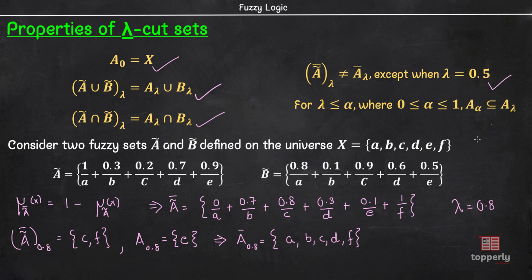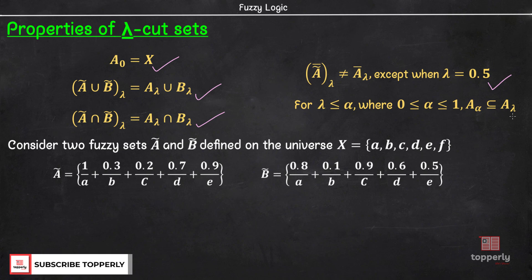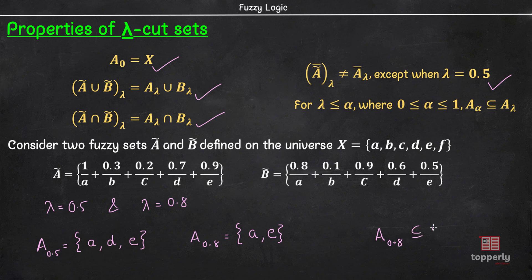As a small exercise, you can repeat this example using lambda equal to 0.5 and see if the complement property still holds. Let me know your answers in the comments. Lastly, for the property that A-alpha ⊆ A-lambda when lambda ≤ alpha, setting lambda equal to 0.5 and alpha equal to 0.8, we have A-0.5 equals {A, D, E} and A-0.8 equals {A, E}, confirming that A-0.8 is indeed a subset of A-0.5.